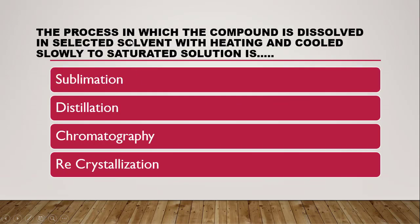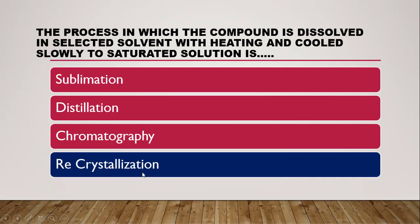Next question: the process in which the compound is dissolved in a selected solvent with heating and cooled slowly to form a saturated solution — wherein the compound is solubilized at higher temperature and made to crystallize out at lower temperatures — is whether sublimation, distillation, chromatography, or recrystallization. The correct answer is recrystallization, wherein the compound dissolved in the selected solvent with heating is cooled to form a saturated solution and crystals are obtained.